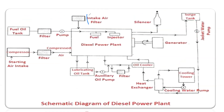The next is the air intake system. In the air intake system, we extract air from the atmosphere. After extraction of air from the atmosphere, it passes through the filter. The function of the filter is to remove the dust and whatever impurity is present in the air.